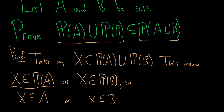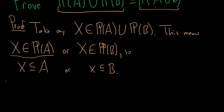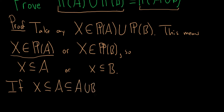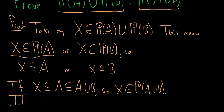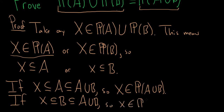Our goal is to show that X is in the power set of A union B. Note: if X is a subset of A, well A is a subset of A union B, so this means that X is in the power set of A union B. If X is a subset of B, which is also a subset of A union B, then X is a subset of A union B, so that means that X is in the power set of A union B.